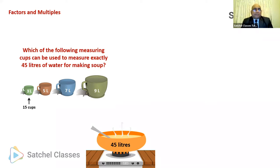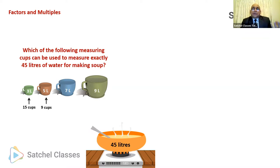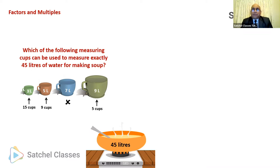Can we use the 5-liter cup? Yes, of course, because we can use 9 of those cups to make 45 liters, since 5 times 9 is 45. What about the 7-liter cup? No, we cannot, simply because 45 cannot be divided by 7 — 7 times 6 is 42, and we'd still have 3 liters to go. What about a 9-liter cup? Yes, of course, because 9 times 5 is 45, so we can use 5 of these cups.